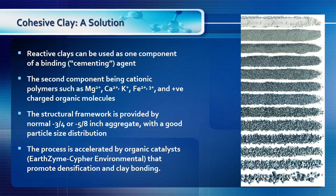As a solution, we use cohesive or reactive clays as one component of a binding or cementing agent. The second component are cationic polymers such as magnesium, calcium, potassium, iron, other positive ions, and also positively charged organic molecules — all found in the natural environment but also added through catalyst use. The structural framework is provided by a normal minus three-quarter or minus five-inch aggregate with good particle size distribution such as a typical A base. The process is accelerated by organic catalysts; we use Ursine, which is provided by Cypher Environmental of Winnipeg, and the catalyst promotes the densification of the material and clay bonding.